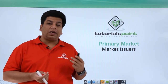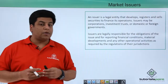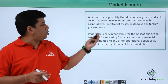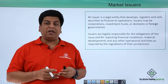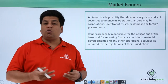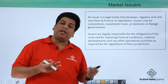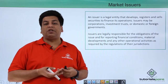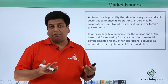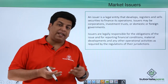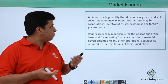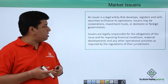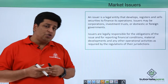Now let's understand what we mean by market issuers. In the case of the primary market, an issuer is a legal entity that develops, registers, and sells securities to finance its operations. For short-term funding they go for short-term loans, but for long-term funding they issue debts or shares. Issuers can be corporations, investment trusts, or domestic or foreign governments.